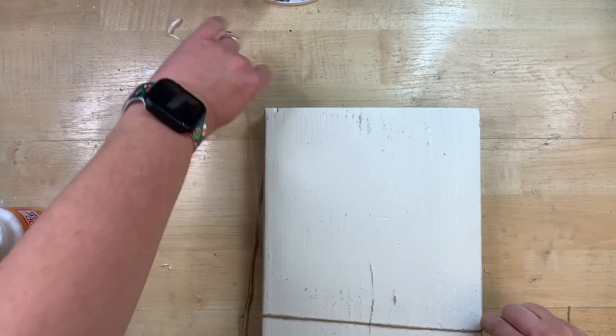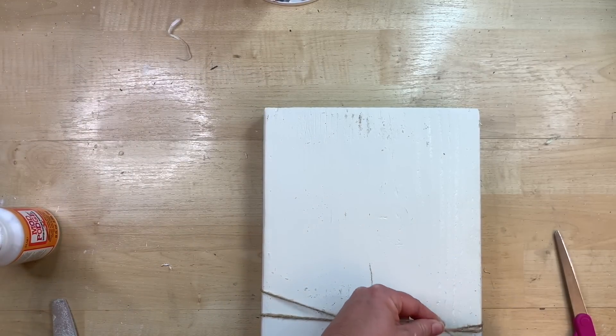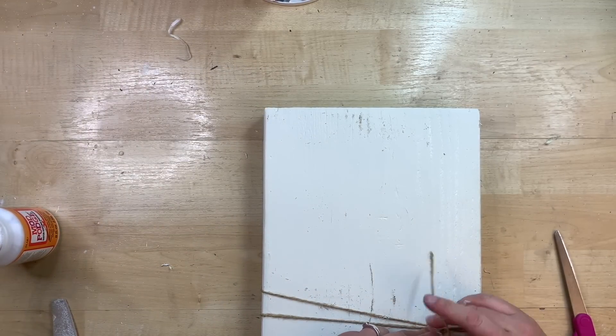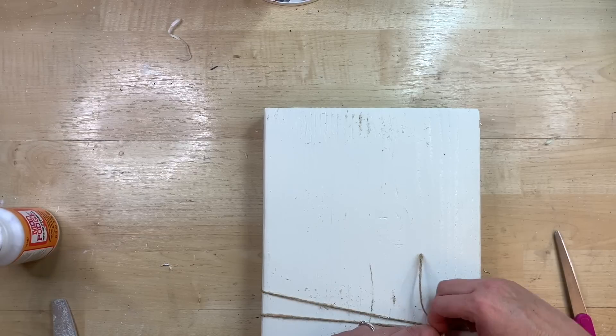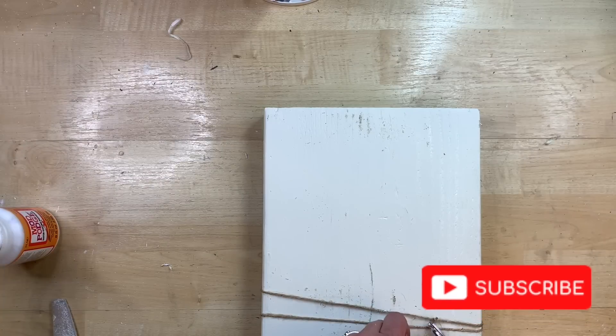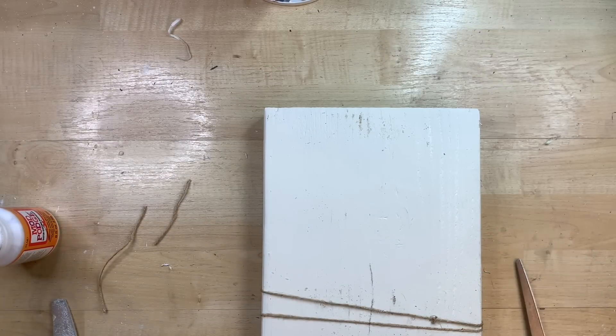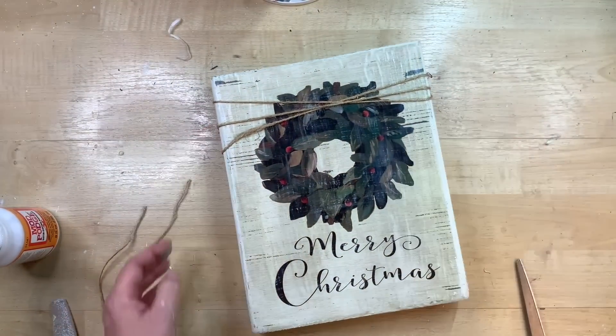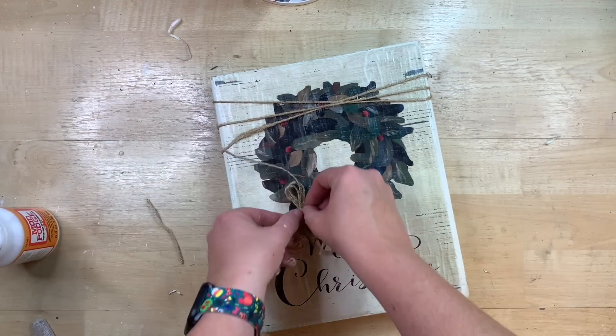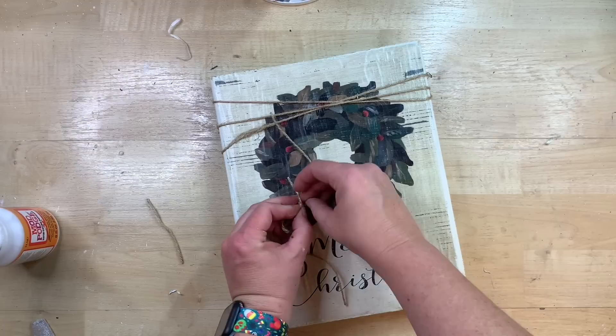And then I do take a thin layer of Mod Podge and place over the top of this just to make sure that calendar page is sealed. So that way if any moisture or anything was to get on this, it wouldn't bubble up. It would protect it. And I thought it would be really cute to just wrap a little bit of twine around this at the top. So I just kind of wrap it in, just do three little wraps around kind of in different ways so you can see it's layered there.